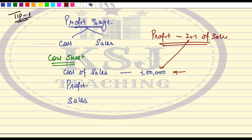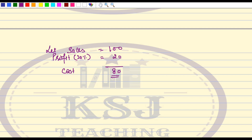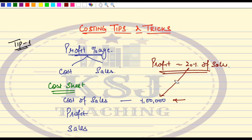Let's try to understand this. Let sales be 100 rupees. As per the question, profit is 20% on sales, so profit will be 20 rupees. If sales is 100 and profit is 20, then cost is sales minus profit, which is 80 rupees. Now, profit as a percentage of cost is 20 divided by 80 multiplied by 100, which comes to 25%. So if profit is 20% of sales, that is equivalent to 25% of cost.